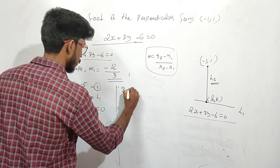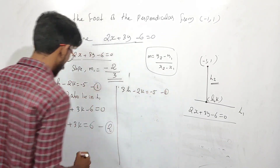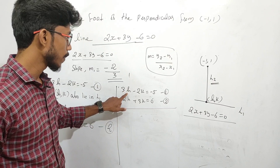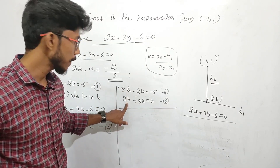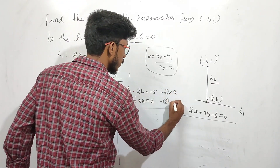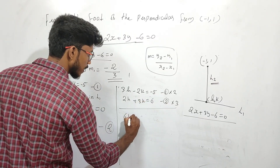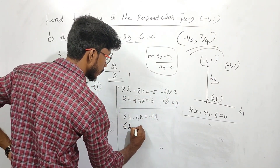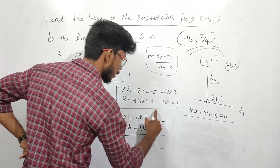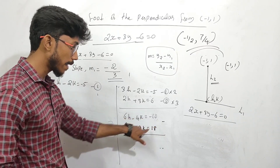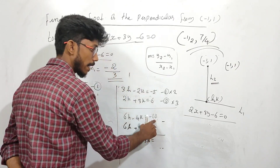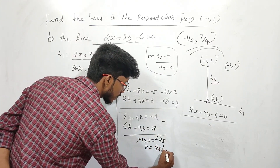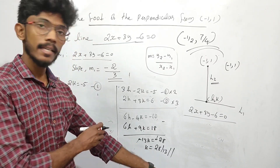Equation number 1: 3h - 2k = -5. Equation number 2: 2h + 3k = 6. Solving these two equations simultaneously. Multiply equation 2 by 3 to eliminate h. We get minus 18 minus 28, then k is equal to... minus 28 by 13. So k equals 28 by 13.